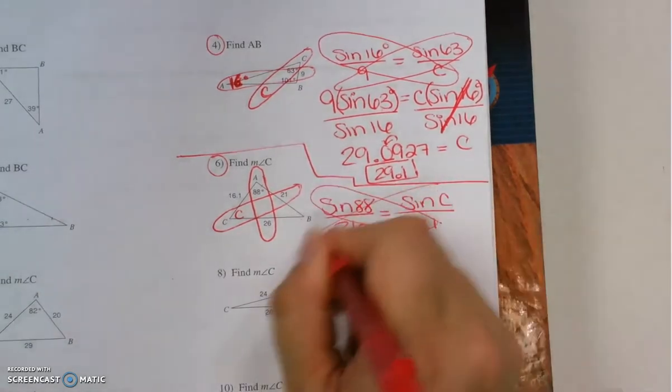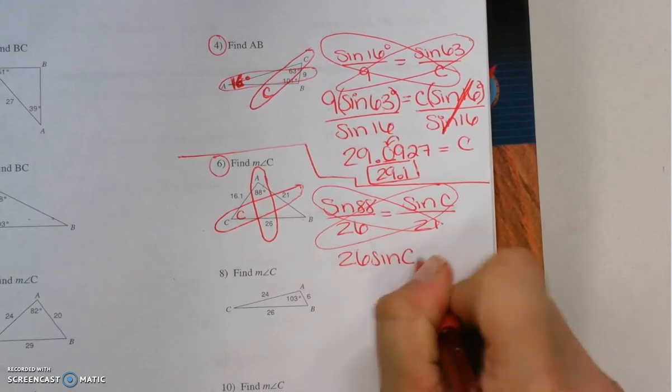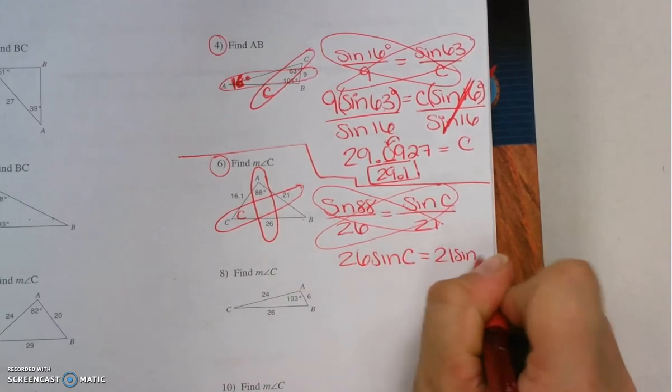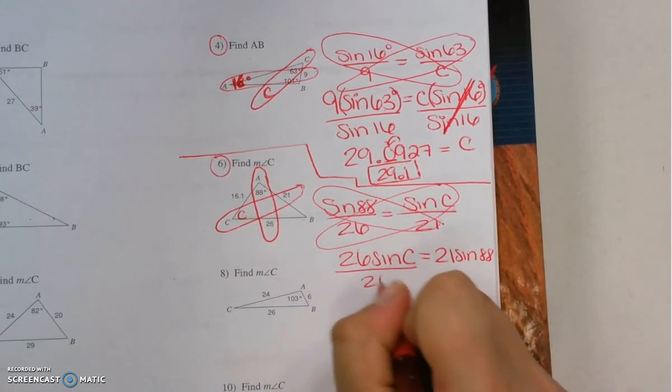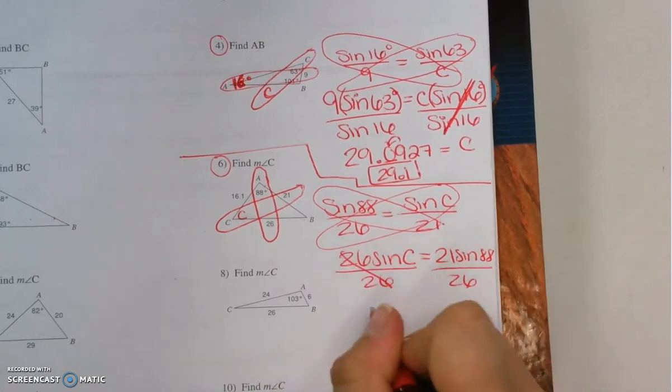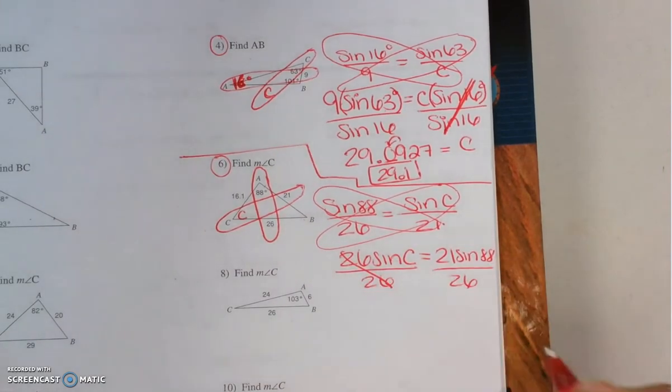Cross products and solve. 26 times sine C equals 21 times sine 88. Divide by 26 on both sides. And we get that sine C equals all that.